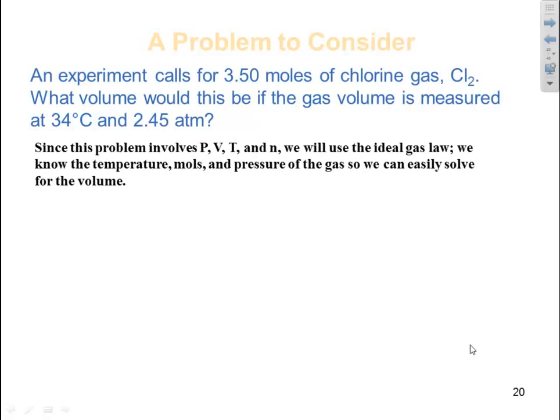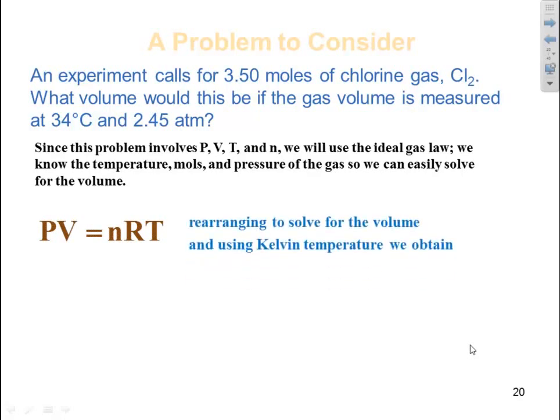Since the problem involves pressure, temperature, volume, and moles, we will use the ideal gas law. We know the temperature, we know the moles, we know the pressure of the gas, so we can easily solve for that volume. So we get PV is equal to nRT. Rearranging this and using Kelvin temperature, we'll get volume is equal to nRT over P.